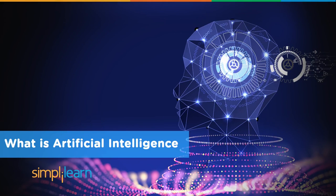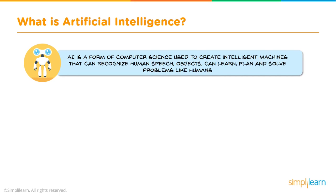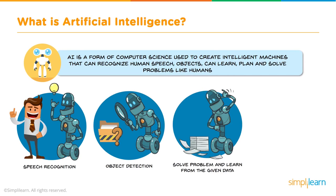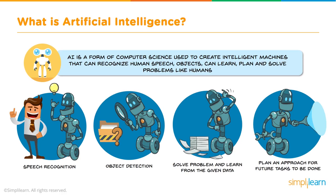AI is a form of computer science used to create intelligent machines that can recognize human speech and objects, learn, plan, and solve problems like humans. Our concept of AI is based on how it interacts and compares to humans — speech recognition, object detection, solving problems, learning from given data, and planning approaches for future tests. These are all very human things that AI is now performing.